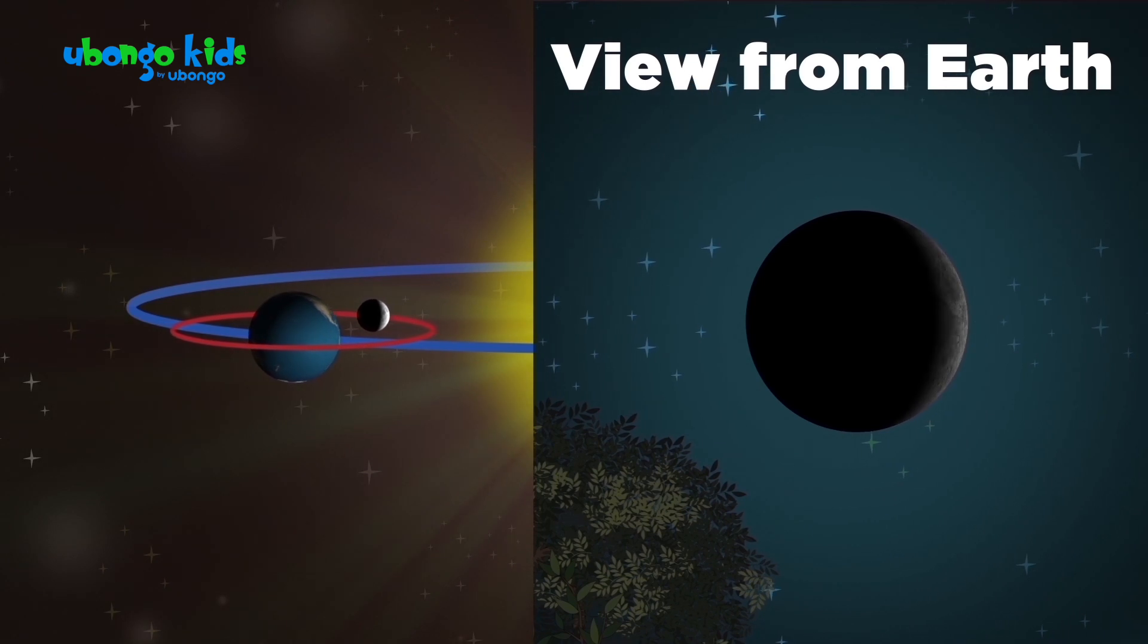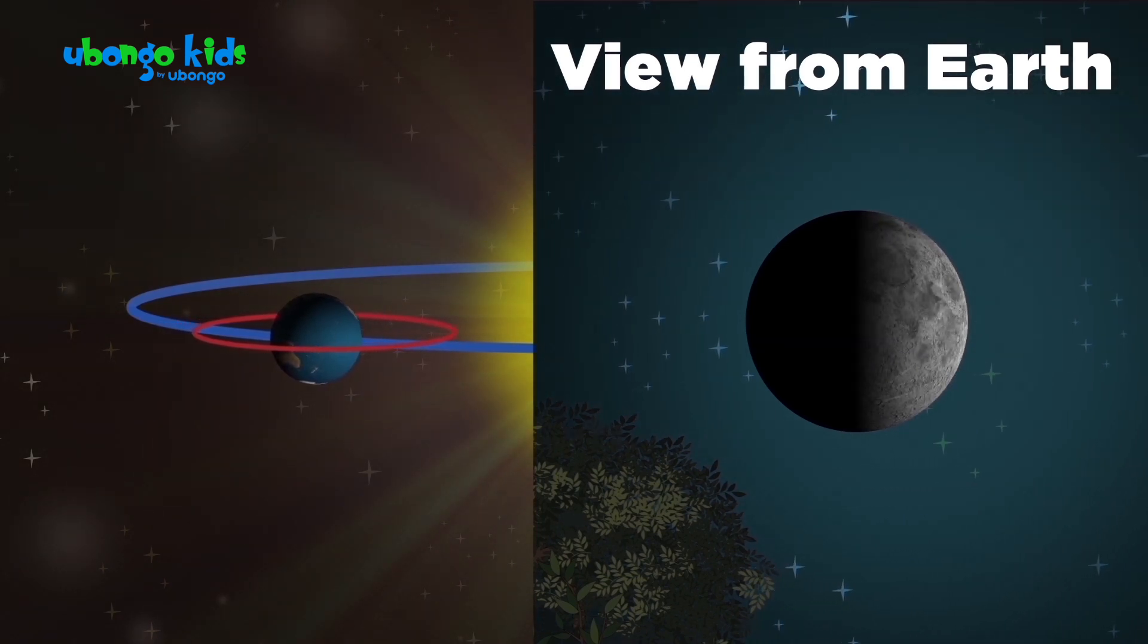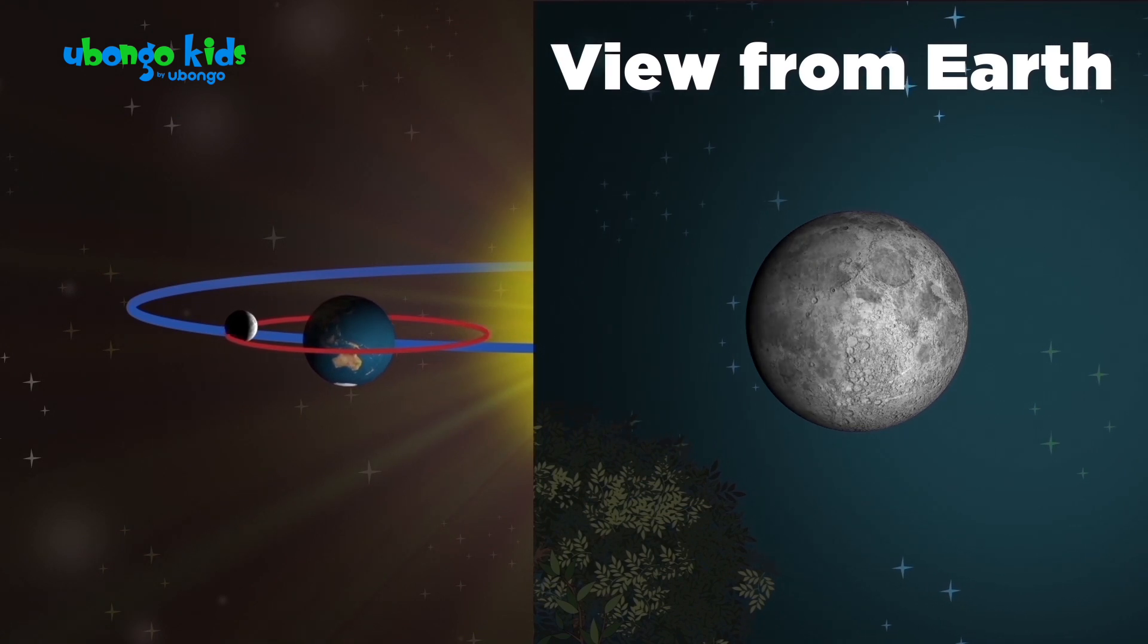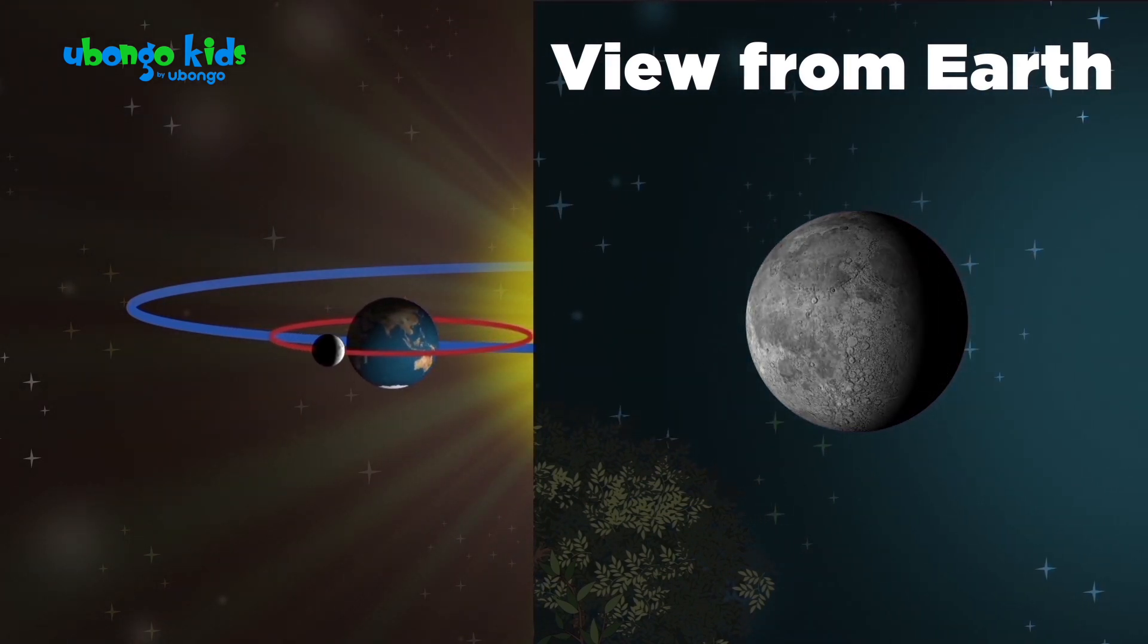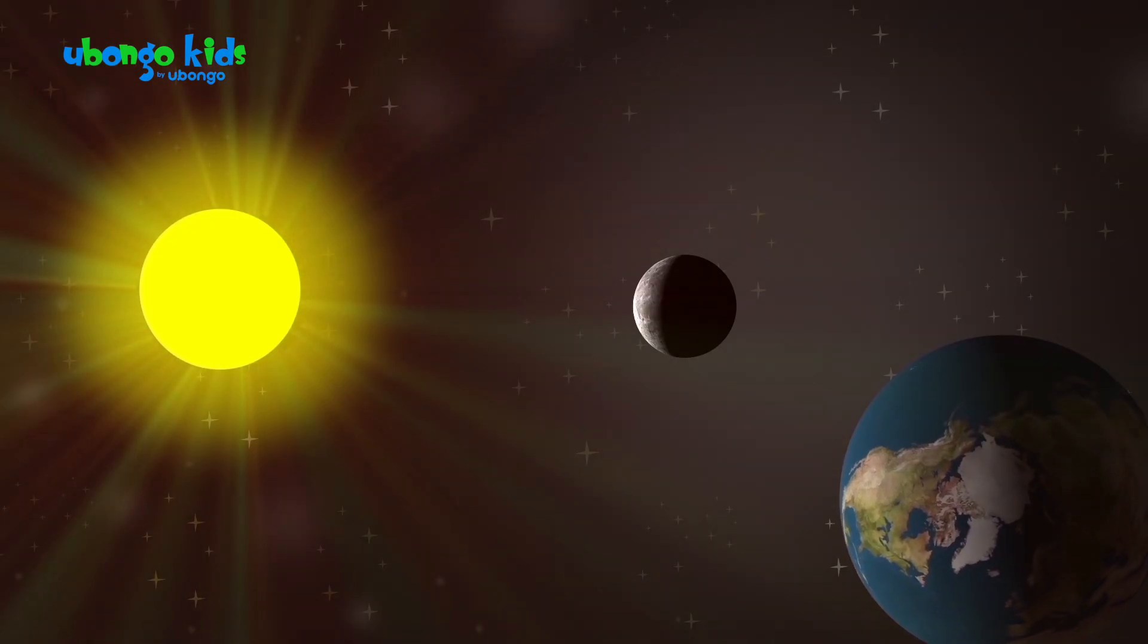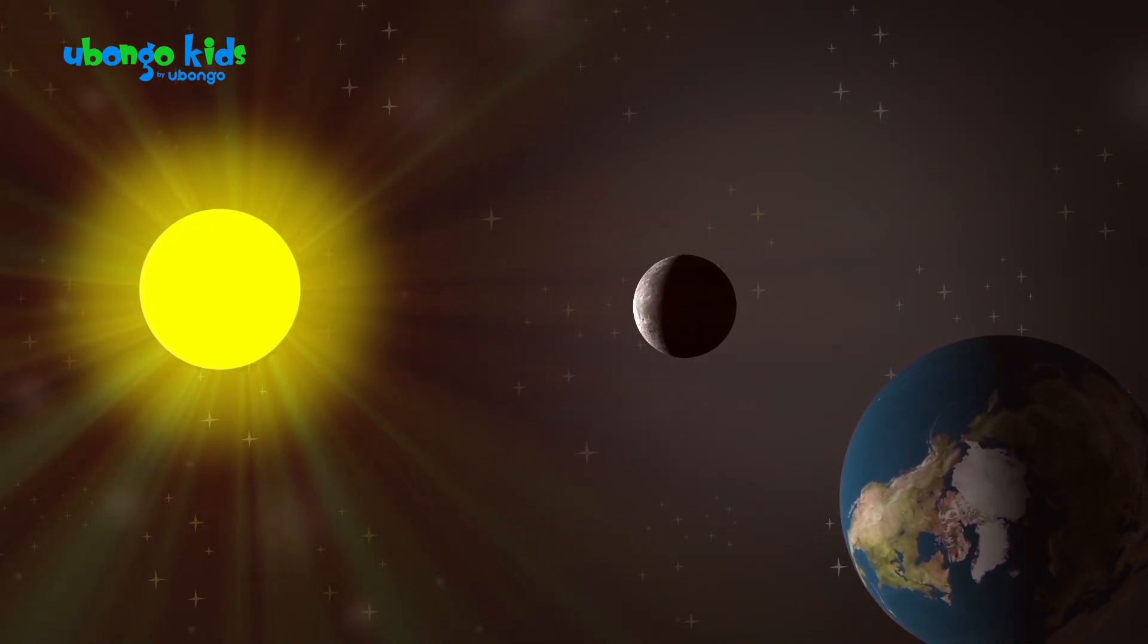So when the moon passes between the Earth and the sun, the sunlight only hits the part of the moon that's facing away from the Earth. So we can't see it. And that's why on other nights, the moon looks so bright.